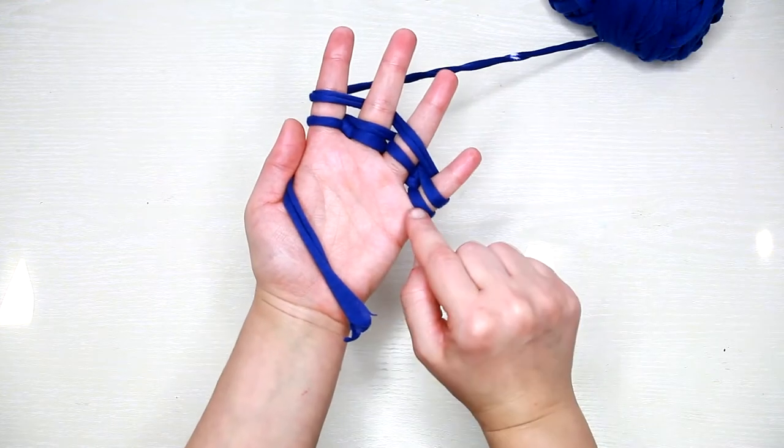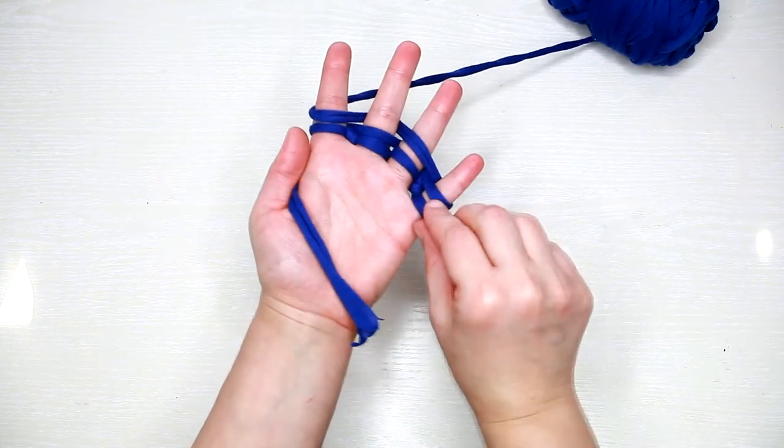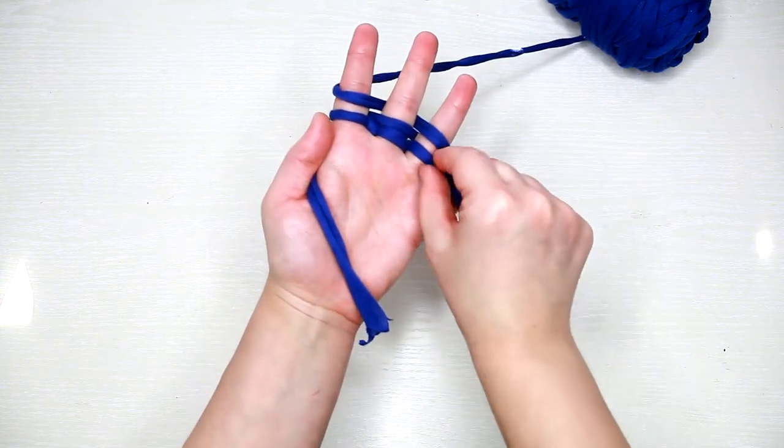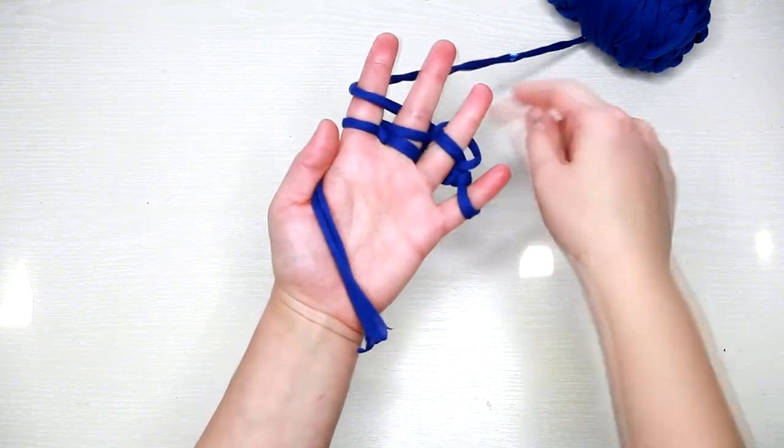You end up having two loops on each finger again. We take the bottom one, pull it over the top one and to the back of the finger.